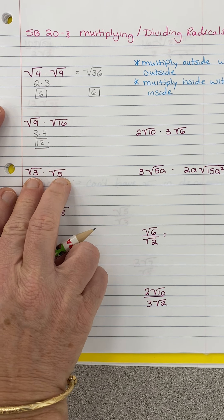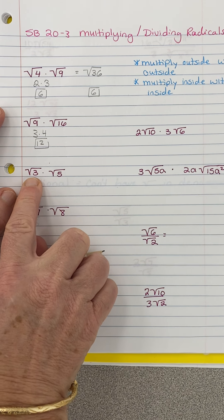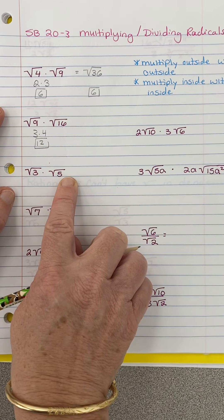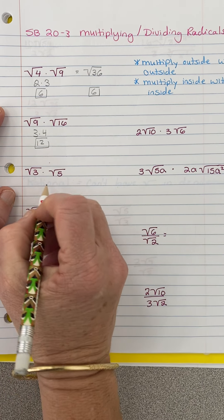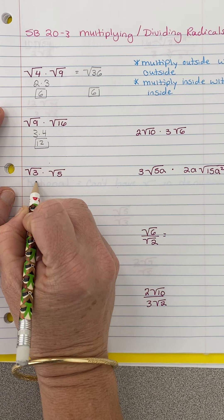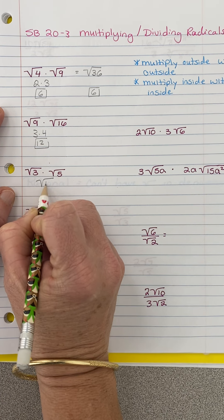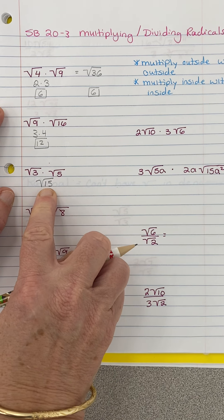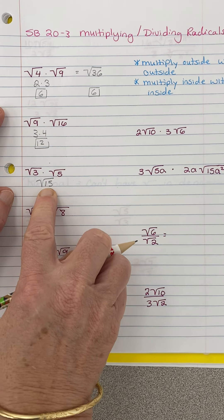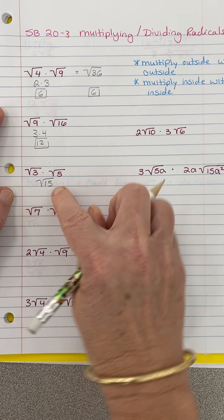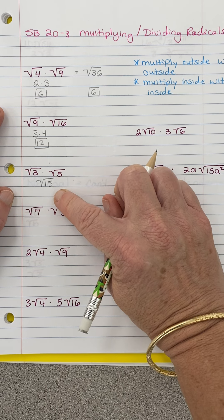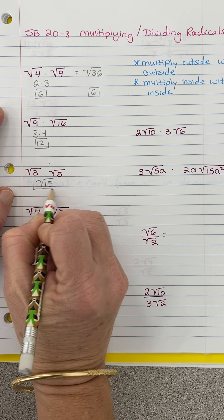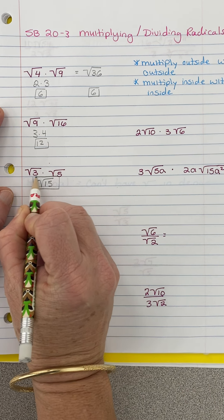Sometimes, as you notice here, there's no perfect square that goes into that — it cannot be simplified. So we have to go straight into multiplying. You do have to double-check this number because sometimes you'll go, oh, now I can simplify it. But we can't — there's no perfect square that goes into 15.